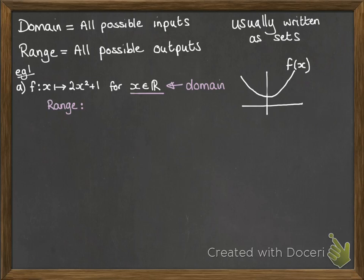That would be when x was 0, it would give us a value of 1. Any other value of x would give us a value more than that. So f(x) would be greater than or equal to 1. That's how you state your range: what f(x) could possibly be or the values it could take.